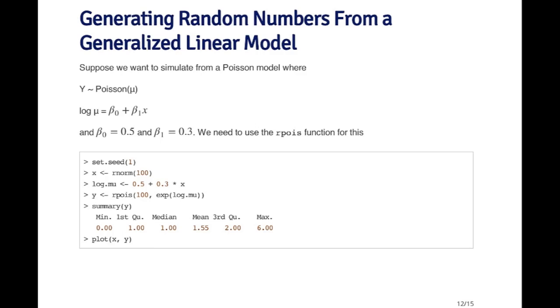But in order to get the mean for our Poisson random variable, we need to exponentiate that. So we simulate 100 of these Poisson random variables using the rpois function, and we give it the exponential of our log mean.